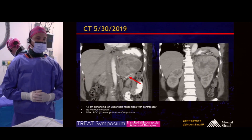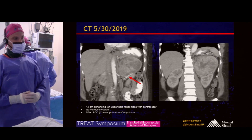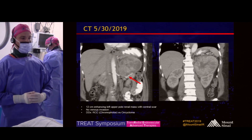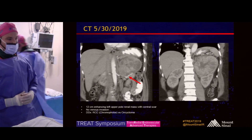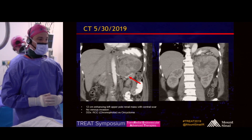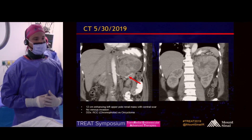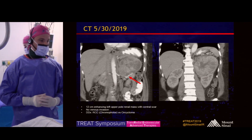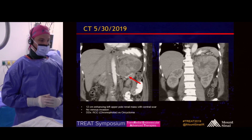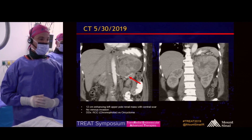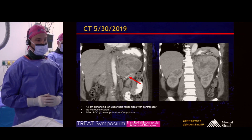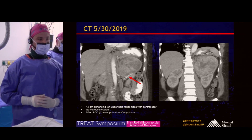A CT scan performed after the initial ultrasound demonstrated a large left upper pole renal mass with low-level enhancement similar to the background kidney and a large central scar. The differential diagnosis for this was RCC, a chromophobe variant, versus an oncocytoma.